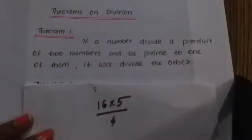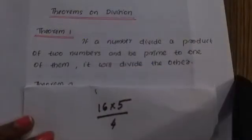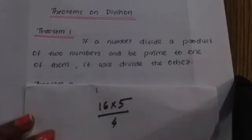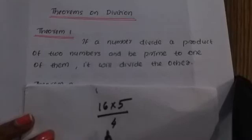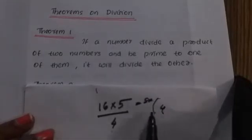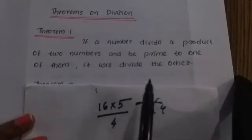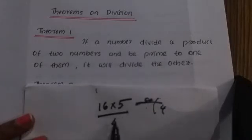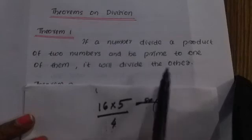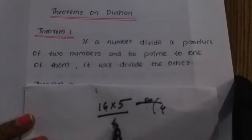Theorem 1: If a number divides a product of two numbers and is prime to one of them, it will divide the other. For example, 16 into 5 is 80, and 80 divided by 4 is 20. So 16 into 5 divided by 4 — if a number divides the other number, it divides the other. This is Theorem 1.